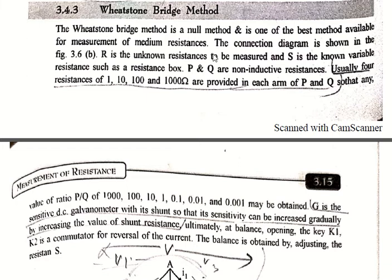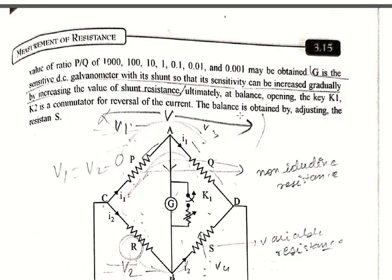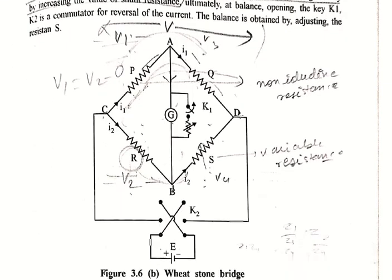This is the best method available for the measurement of medium resistances. We have used this Wheatstone bridge method in our AC bridges chapter also as the base of that chapter. Now coming to the connection diagram of the Wheatstone bridge method — this is the basic arrangement.